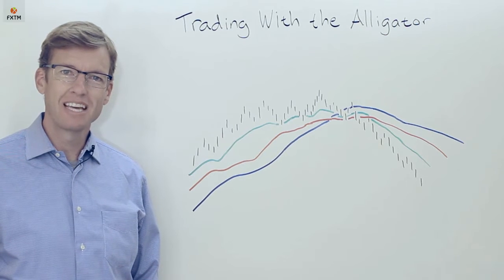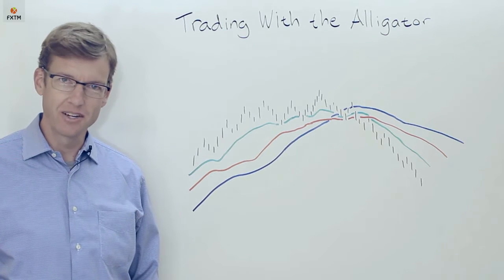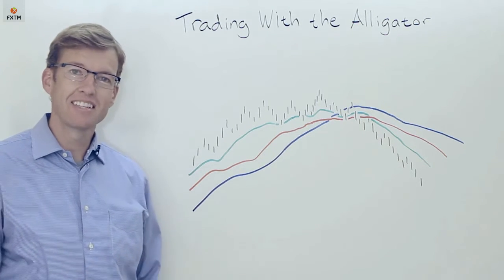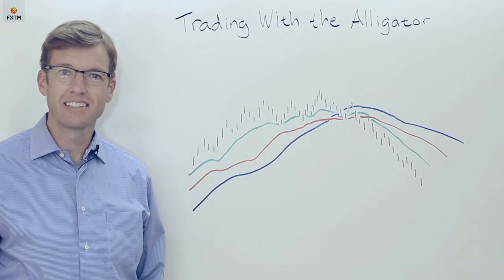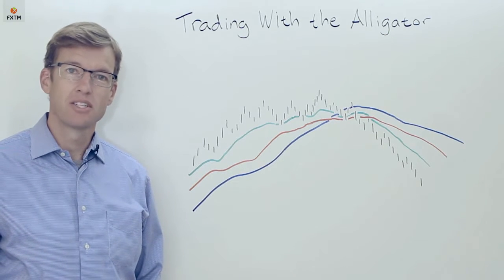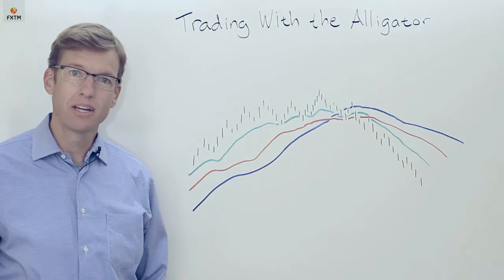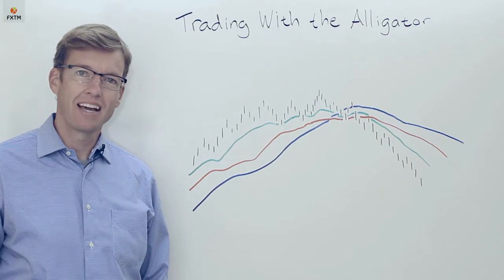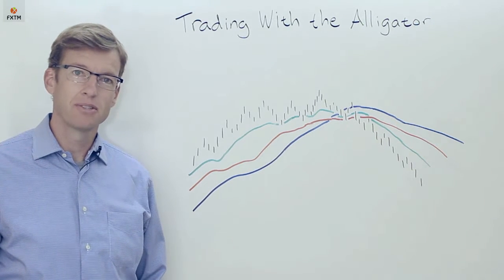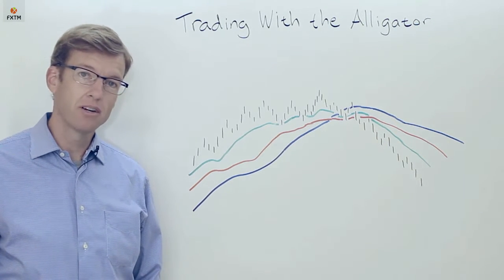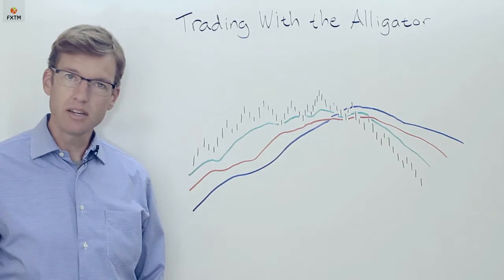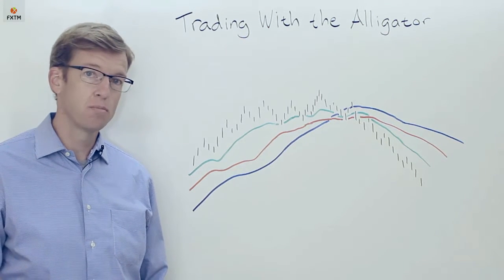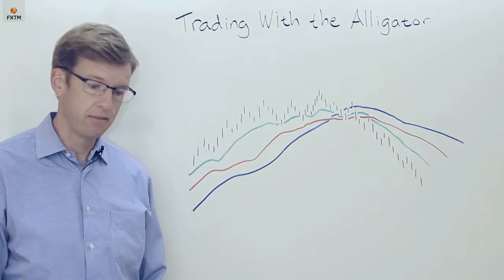In this episode of the FXTM educational series we're going to be taking a look at the alligator. This is a series of technical indicators and overlays as well as a trading system created by Bill Williams. The idea behind the alligator is to find and identify trading opportunities in favor of a strong trend, and the way it works is it's essentially a combination of three smooth moving averages.